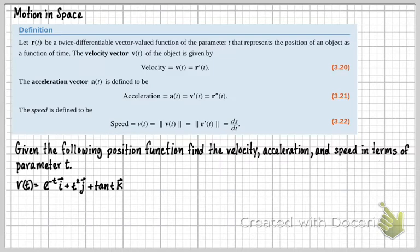So we're going to do each of these for this problem below. It says, given the following position function, find the velocity, acceleration, and speed in terms of parameter t. So at first we're going to find this velocity. So what that means is we just need to find the derivative of r.